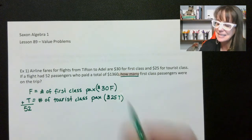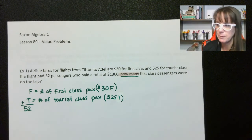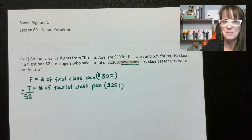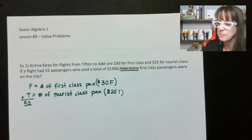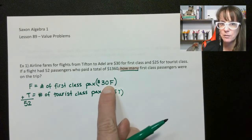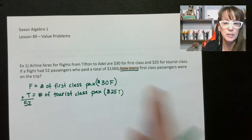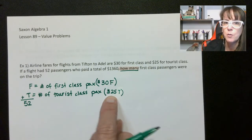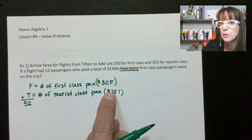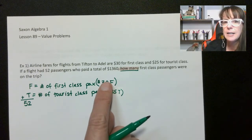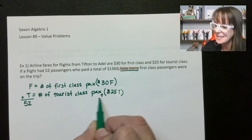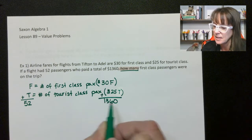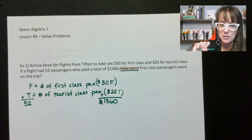In Saxon, they use subscripted variables, and I think this is important. If we had one first class passenger, that's $30, and one tourist class passenger, that's $25 — together that's $55. So when we add these two things up, we end up with $1,360. That's important information for the next equation.